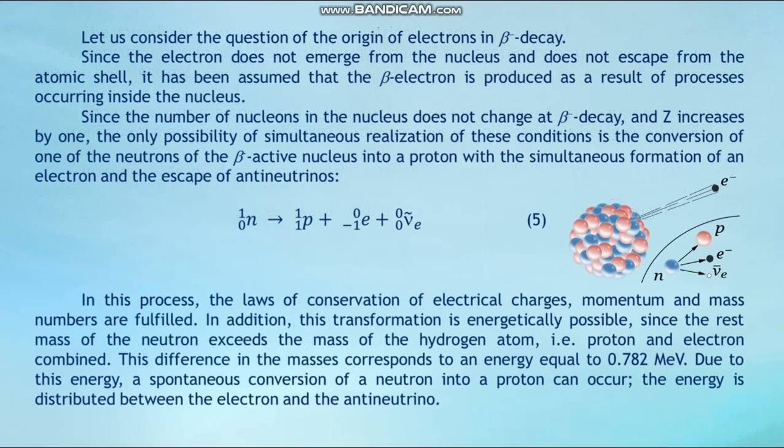Regarding the origin of electrons in beta minus decay: since the electron does not emerge from the nucleus and does not escape from the atomic shell, it has been assumed that the beta electron is produced inside the nucleus. Since the number of nucleons does not change at beta minus decay but Z increases by one, the only possibility is the conversion of one of the neutrons of the beta minus active nucleus into a proton, with the simultaneous formation of an electron and emission of an anti-neutrino.